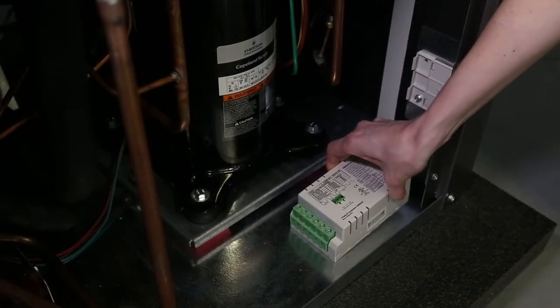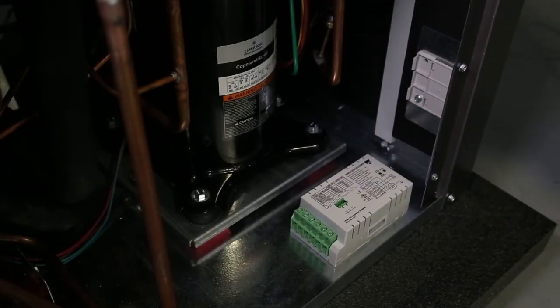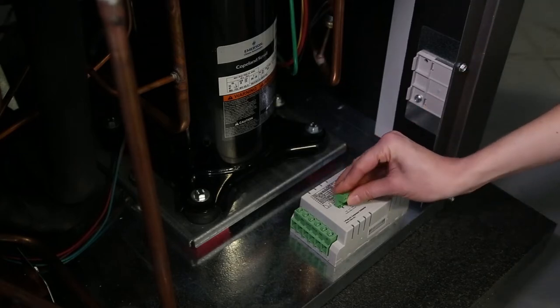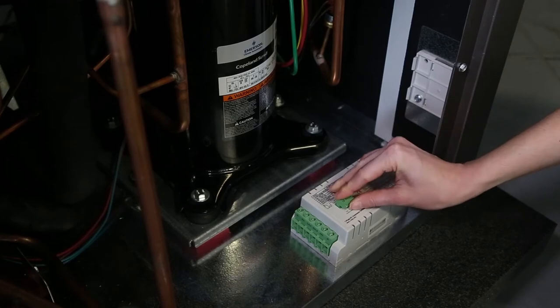Lay the soft start module in the bottom pan close to the bracket that it will be mounted on to do all of the wiring. Push the auxiliary relay terminal connector into place on the top of the soft start module.